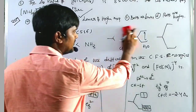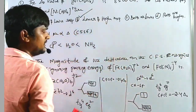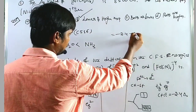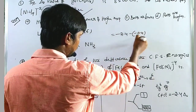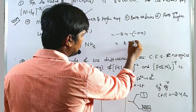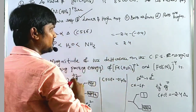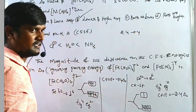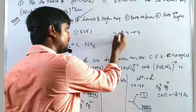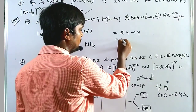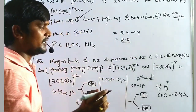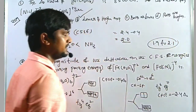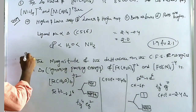Now they are asking about the difference between these two CFSE values. The difference is 2.4 minus 0.4 (ignoring signs, since they are both below the barycenter) = 2.0 ΔO. The answer falls in the range 1.9 to 2.1. This is a great question which came from GATE 2060.